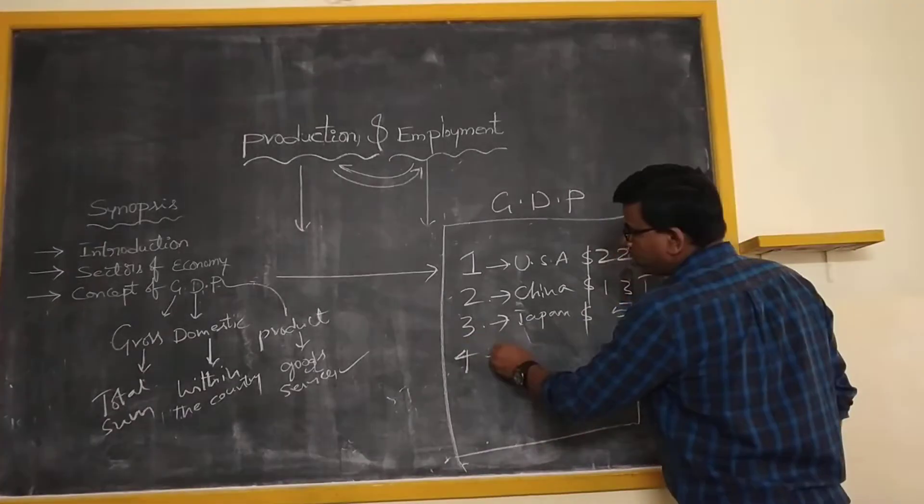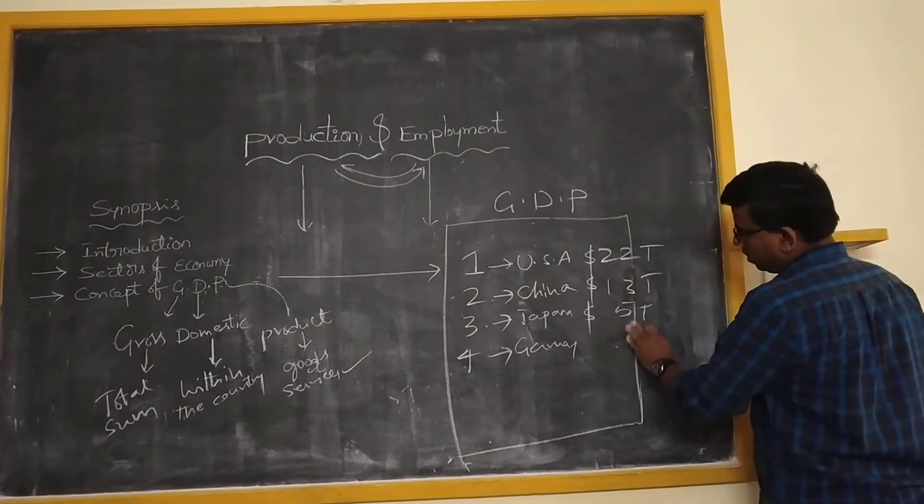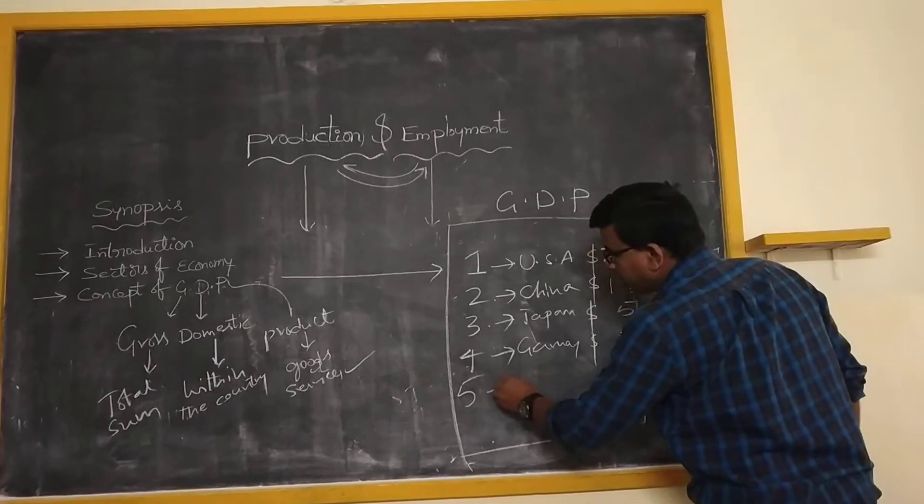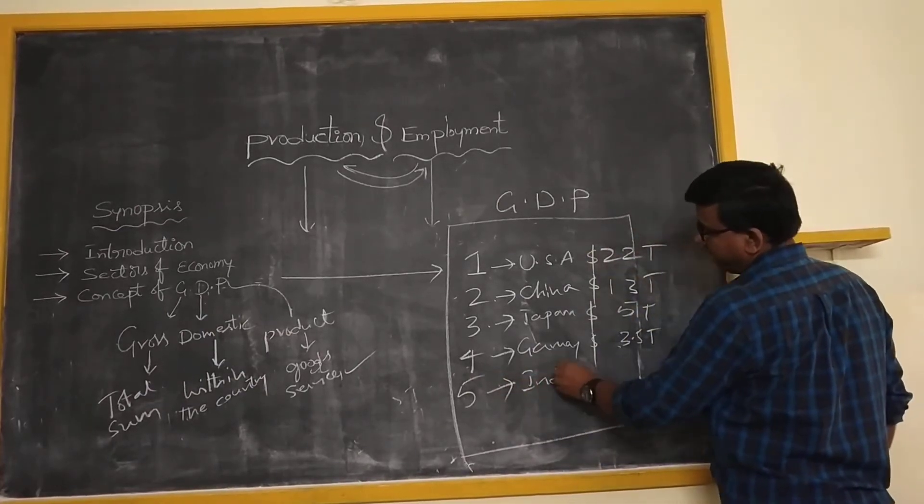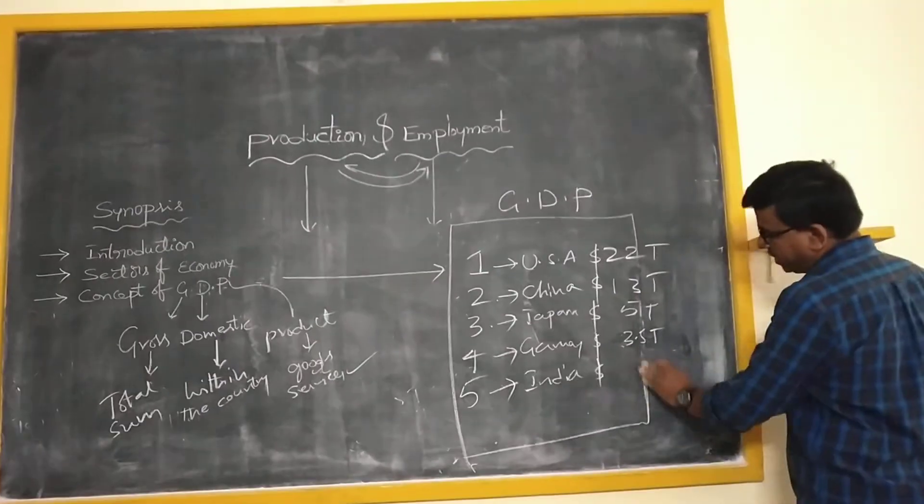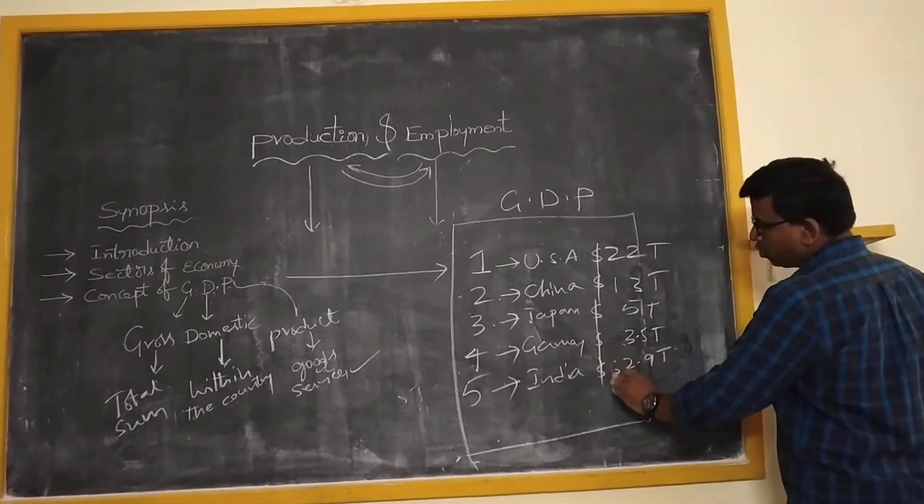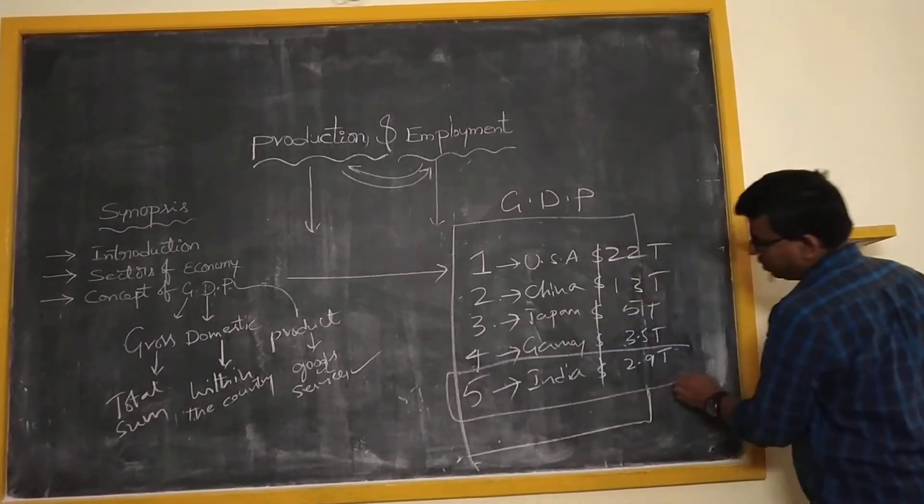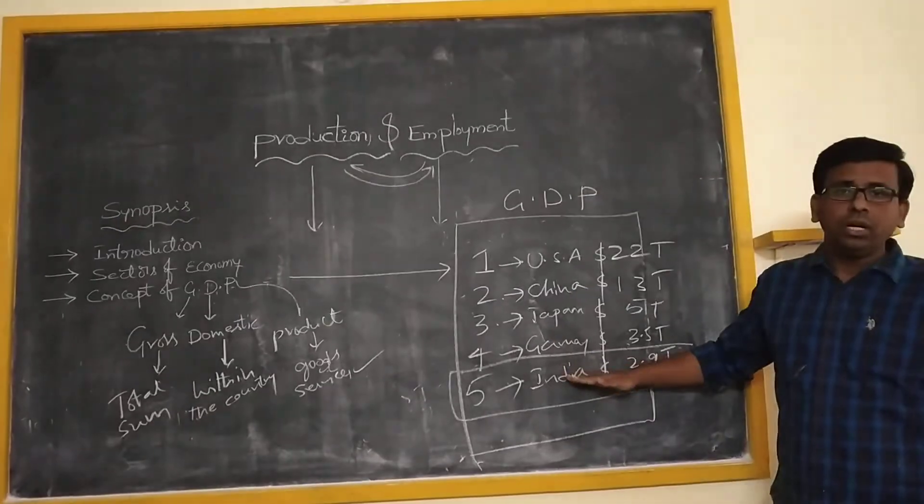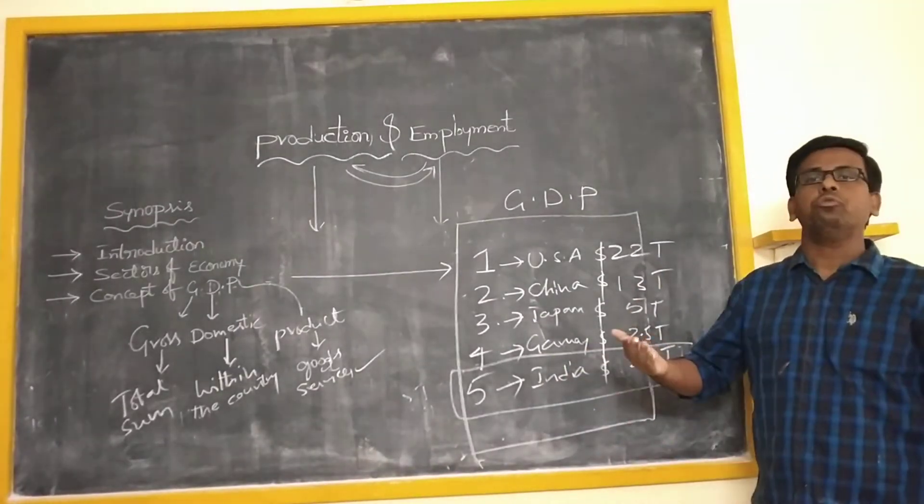Next, fourth position occupied by the country Germany, with 3.5 billion dollars. Now the fifth position occupied by India. Our GDP value of India is, at present, approximately 2.9 trillion dollars, which occupied the fifth position. So being the fifth largest economy in the world, still in India, many more issues are there, need to be solved.